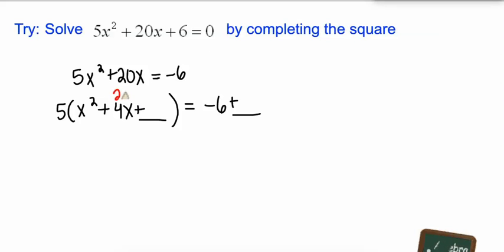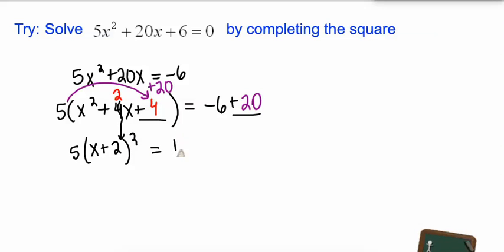Half of 4 is 2. 2 squared is 4. However, we're really multiplying 4 times 5, so we've really added 20 on the left-hand side. We're going to add 20 on the right-hand side. When we factor that, x plus 2 quantity squared is equal to 14.